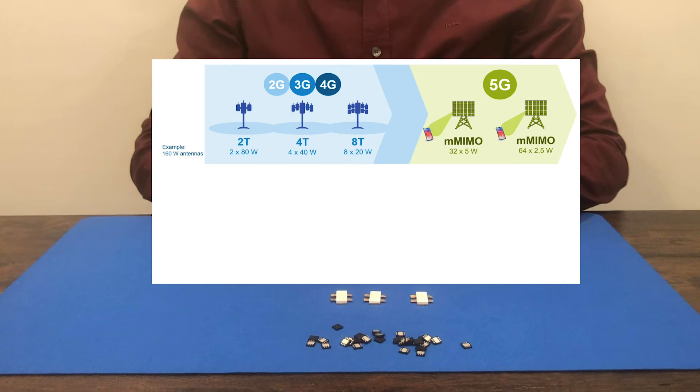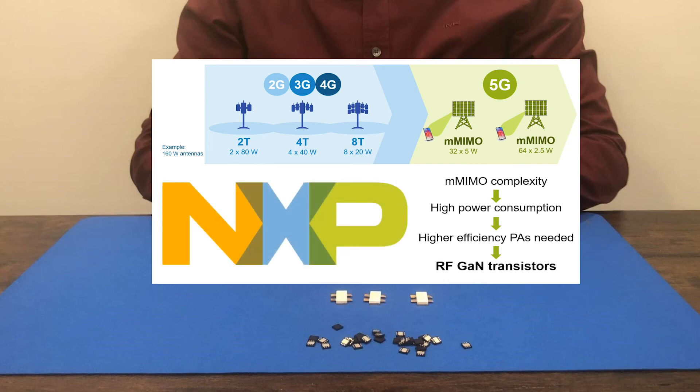As you can imagine, each of these tiny chips make up a PA lineup and a full transmit chain. And this new complexity is power hungry. That is why GaN comes into play. RF GaN transistors have an awesome efficiency. Thank you for watching.